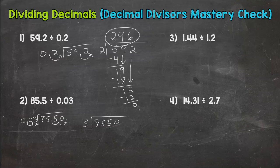So how many groups of 3 out of 8? That's 2. 2 times 3 is 6. Subtract I get 2. Bring down that 5. How many groups of 3 out of 5? That's 5.